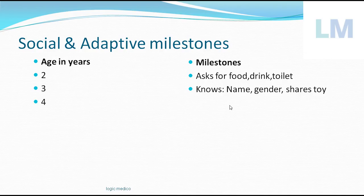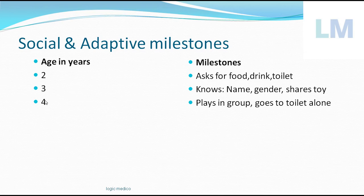At four years of age, the child starts playing in a group — imagine a group of four people playing together. Until now the child was not playing in groups, but now it starts group play. It also goes to the toilet alone at four years of age — previously it needed help, but now it manages independently.